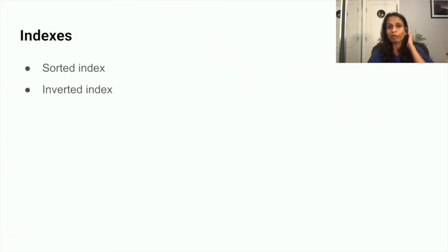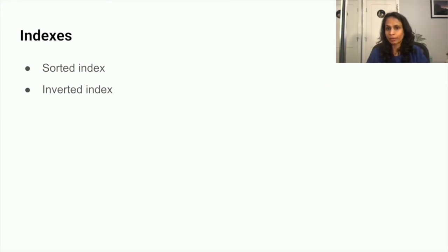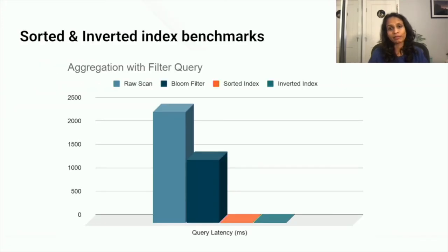Pinot offers a bunch of powerful indexes which are super useful for bringing latencies down, each helping speed up certain types of use cases. Inverted index and sorted index help speed up queries with filter predicates. A benchmark for an aggregation query with a filter predicate showed the raw scan took over two seconds, whereas with inverted index and sorted index the query ran in just a few milliseconds.